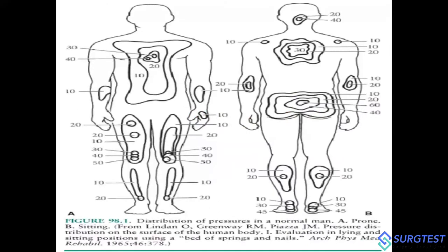In the diagram showing pressure areas when the patient is lying in the prone position, pressure is mostly over the chest and sternum. The next highest pressure point is the patella, marked on both sides. These are the significant points for the prone position.